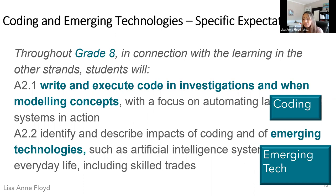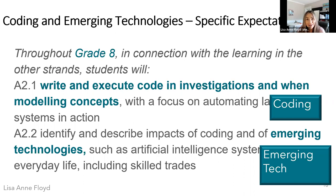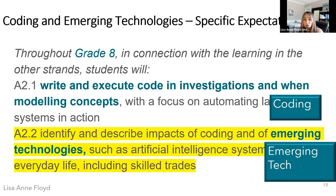A2.2 is the focus of this webinar. It states that students will identify and describe impacts of coding and emerging technology — such as artificial intelligence systems — on everyday life, including skilled trades. In grades seven and eight the term 'artificial intelligence' is explicitly used. From grade four up, it introduces skilled trades. Every grade level is expected to identify and describe impacts of emerging tech.